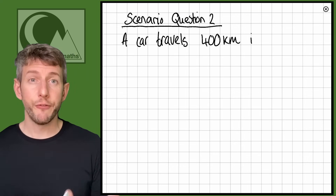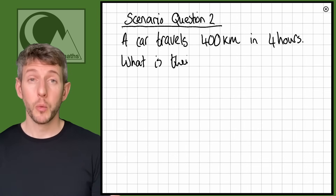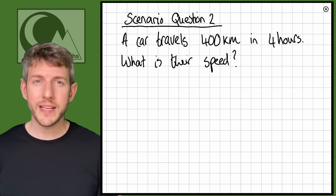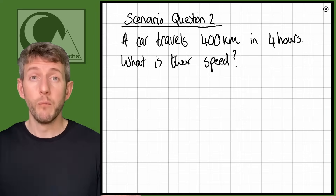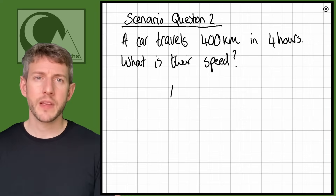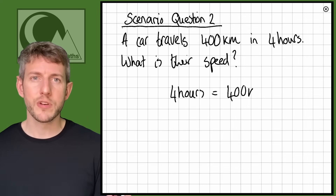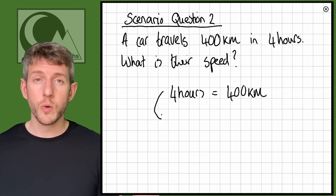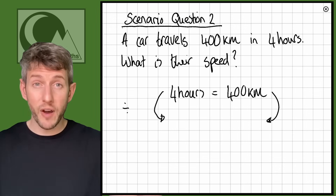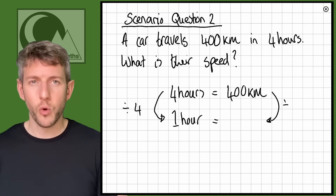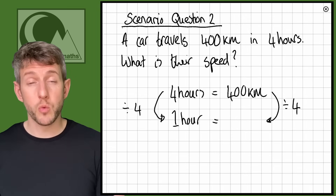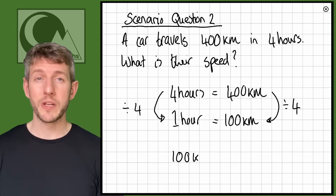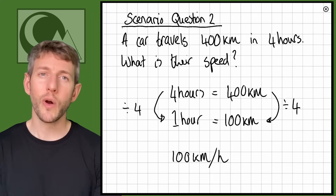Another question: a car travels 400 kilometers in four hours — what is their speed? We're looking for how many kilometers they do in one hour. We have four hours equals 400 kilometers. Divide both sides by 4: four divided by four equals one hour, 400 divided by four equals 100. This person was going 100 kilometers per hour.